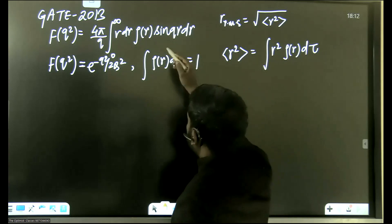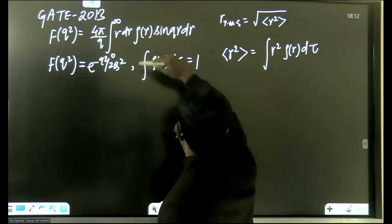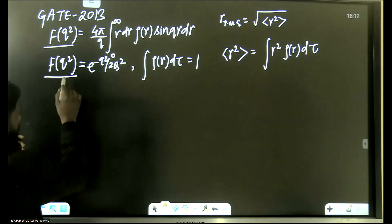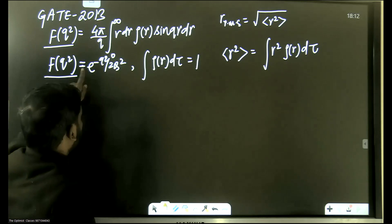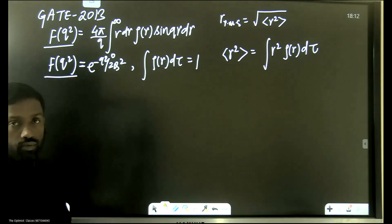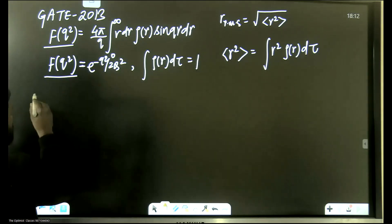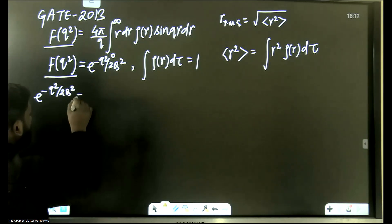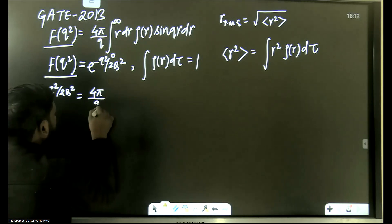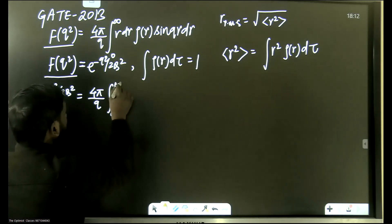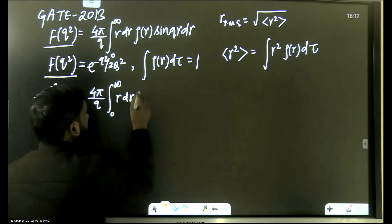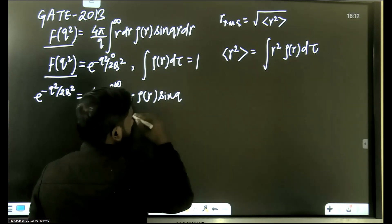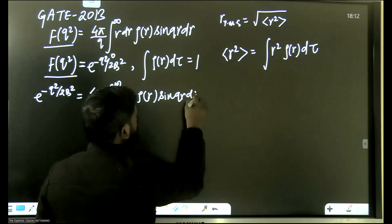We have two expressions for F(q²). We write: e^(−q²/2Q²) = (4π/q) times the integral from zero to infinity of r·ρ(r)·sin(qr) dr. That is what we have.